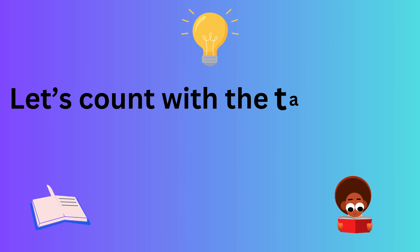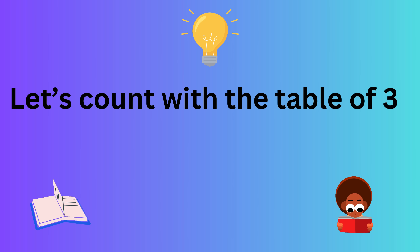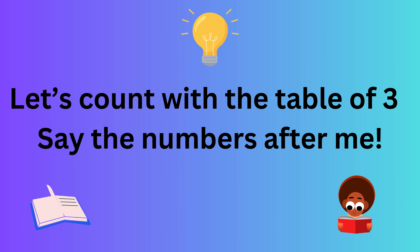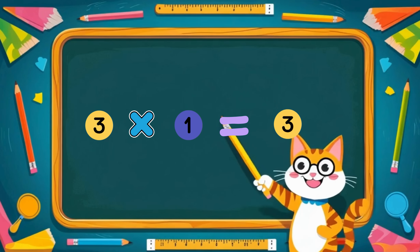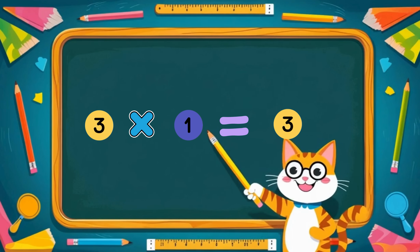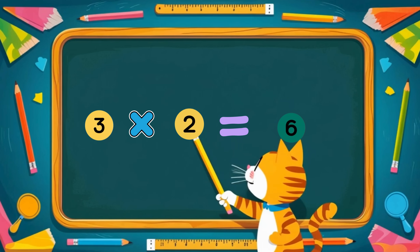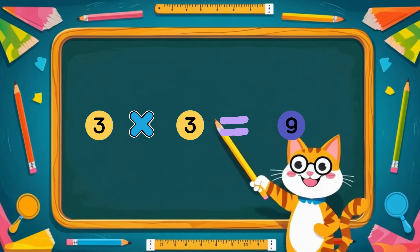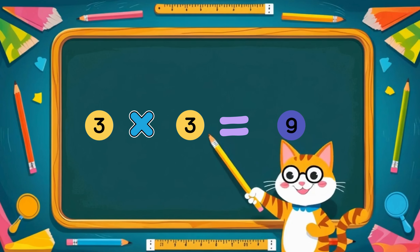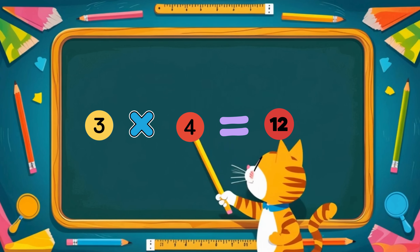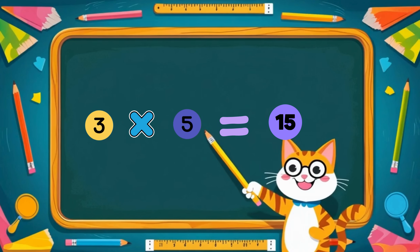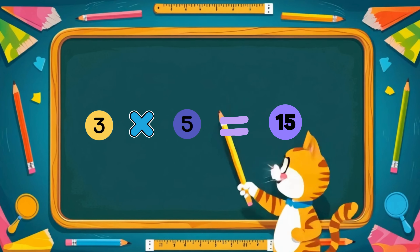Let's count with the table of three. Say the numbers after me. Three times one is three. Three times two is six. Three times three is nine. Three times four is twelve. Three times five is fifteen.